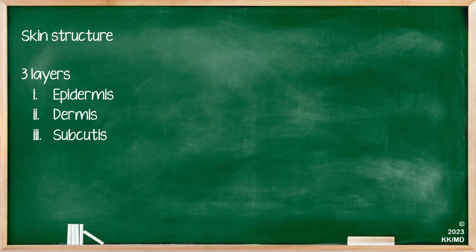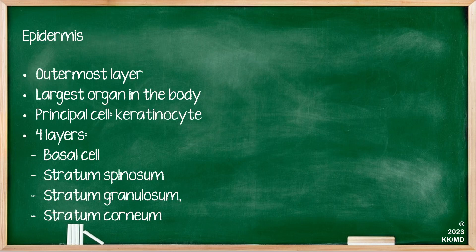Let's start by talking about skin structure. From a very basic standpoint, you have three layers in the skin. These from outermost to innermost layer are epidermis, dermis, and subcutis. Starting with the epidermis, this is the outermost layer and it's the largest organ in the body. Its principal cell is keratinocytes, and it has four layers including the basal cell layer, stratum spinosum, stratum granulosum, and stratum corneum.